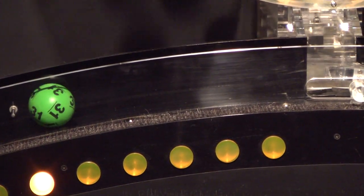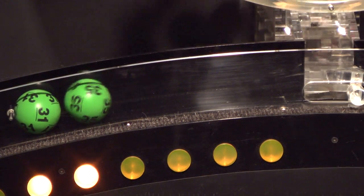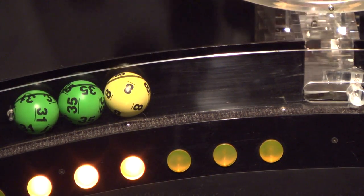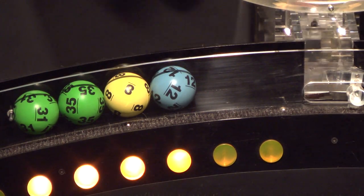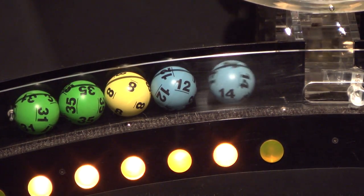Our first number up is number 31. And after that we have number 35. And here comes number 8. Up next is 12. And the final ball in this sequence is number 14.